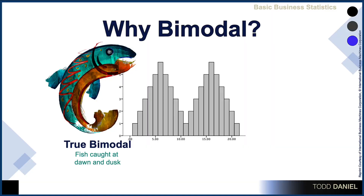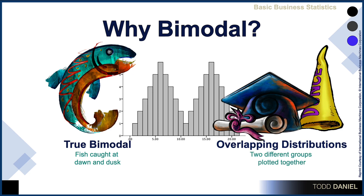Another time that we might have a bimodal distribution is when we have overlapping distributions. Imagine that we have collected a set of scores about college students and we're examining our data using descriptive statistics. We plot our data and we discover that there is a bimodal distribution of most frequently occurring scores.